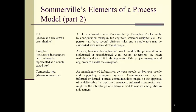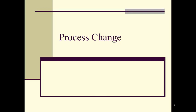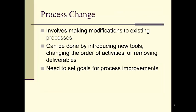Exceptions may not be shown in the examples but can be represented as a double-edged box, and communication is shown as an arrow in Somerville's. Processes are not stagnant and do change when an organization undergoes change. Process change involves making modifications to existing processes. It can be done by introducing new tools, changing the order of activities, or removing deliverables. You need to set goals for your process improvements based on the things that you can measure.